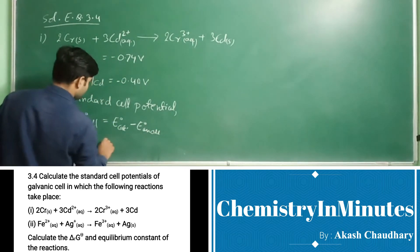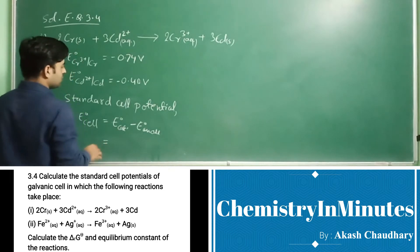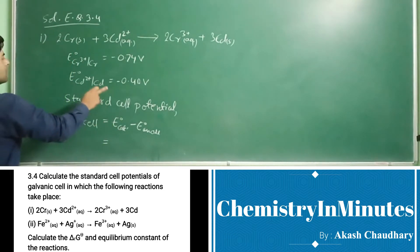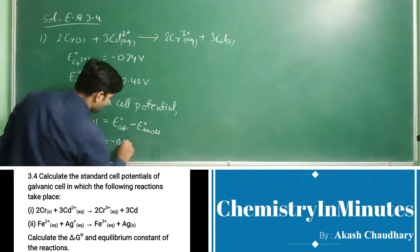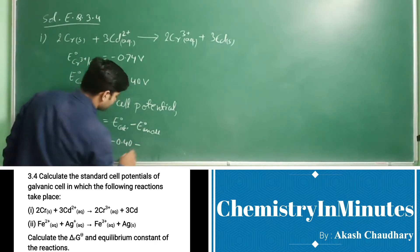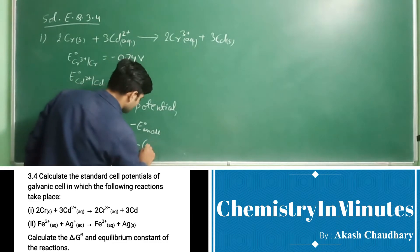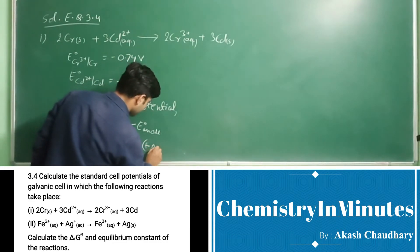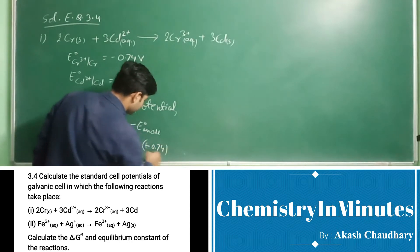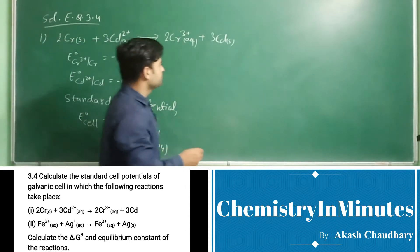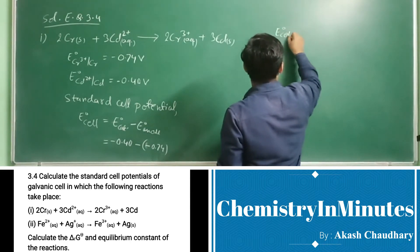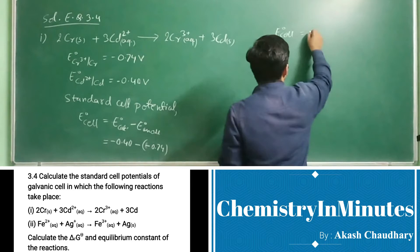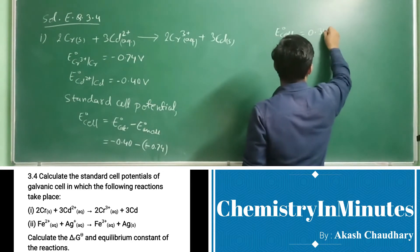Putting in the values: the cathode is the cadmium electrode, so E⁰cathode = −0.40 V, and E⁰anode = −0.74 V. Therefore, E⁰cell = −0.40 − (−0.74) = 0.34 V.